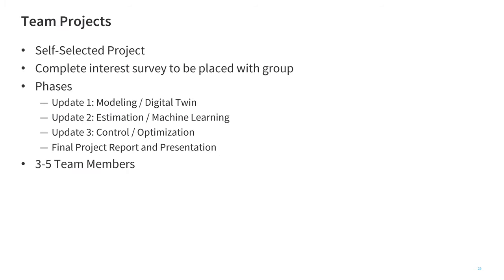A little bit more about team projects. These are going to be self-selected projects. Midway through the course, we're going to have you complete an interest survey to be placed with a group, with those from industry or academia with similar interests to yours. We're going to go through this course in a number of different updates. We have the first phase is to develop some mathematical representation of your system. Now, this could be a physical piece of hardware that you're trying to control, like maybe a self-balancing robot or other type of device. But the very first thing we want to do is create a mathematical representation of what you're trying to control or optimize.